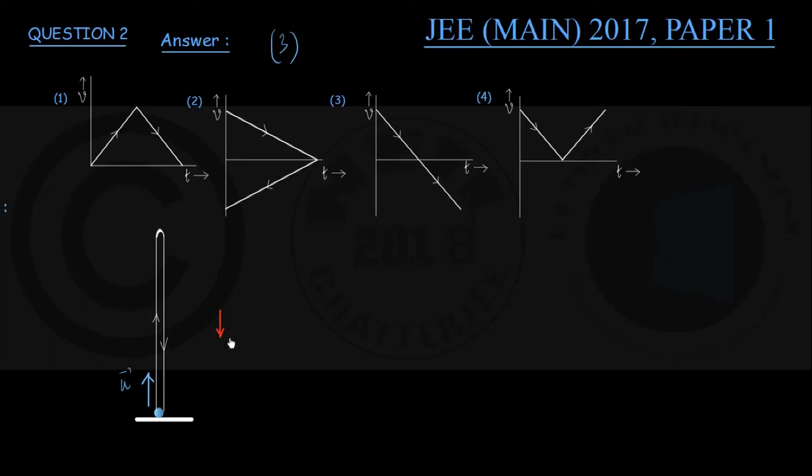So if I choose a coordinate system consisting of only one axis, that is the y-axis, and take the upward direction as the plus y direction, you can see the velocity vector v is positive during the upward motion.